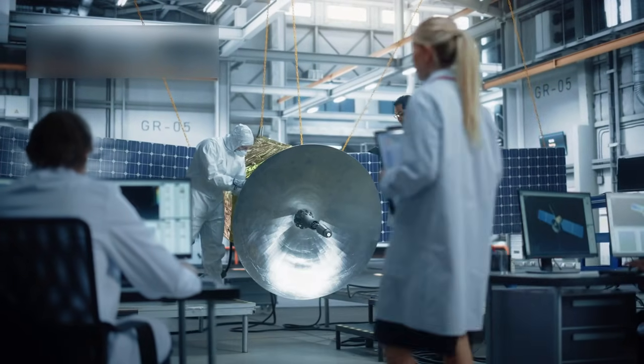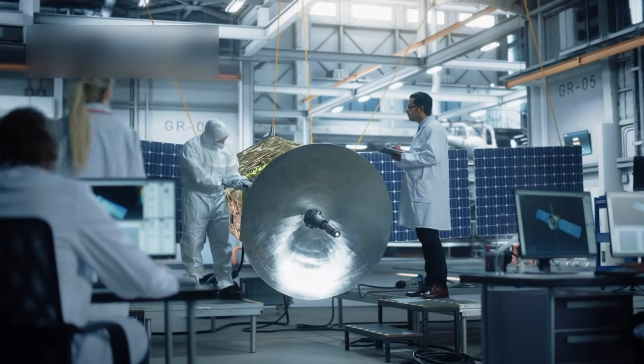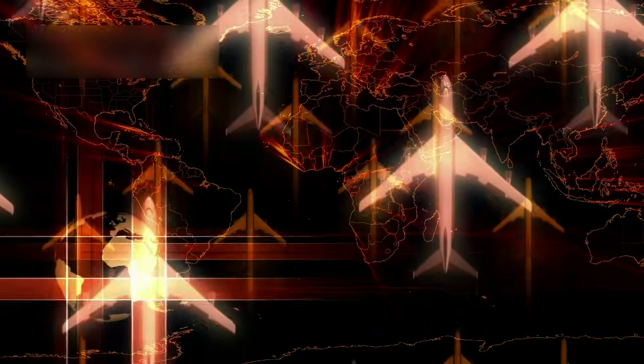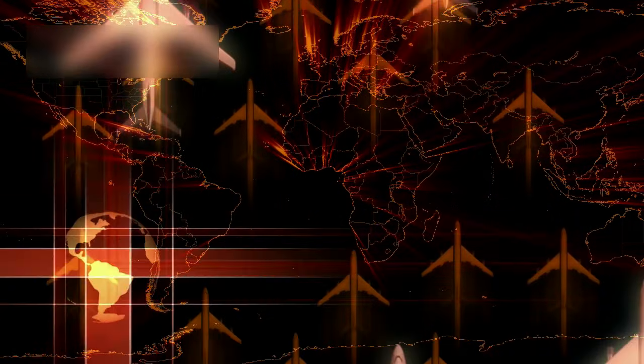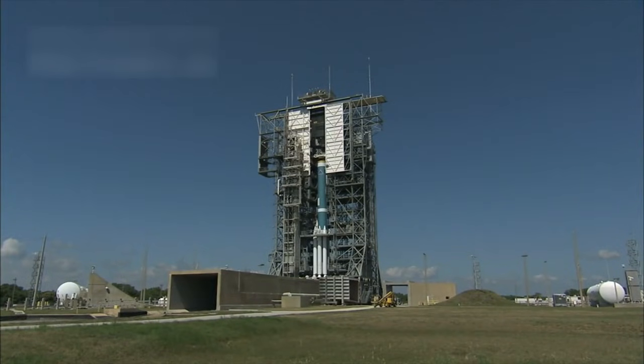Engineers built Voyager using simple and reliable technology. They knew repairs would never be possible once it left Earth. Every wire, switch, and circuit had to survive extreme cold and radiation. This careful design is one reason the spacecraft still functions today.